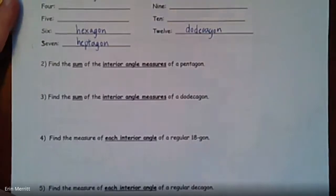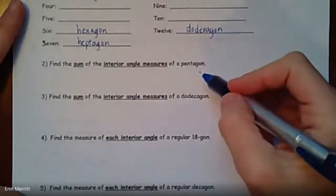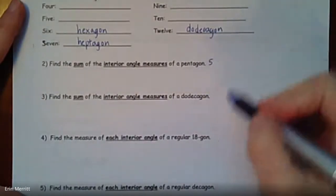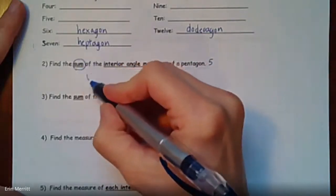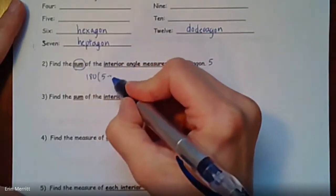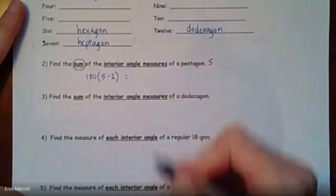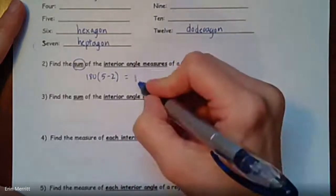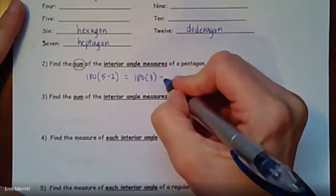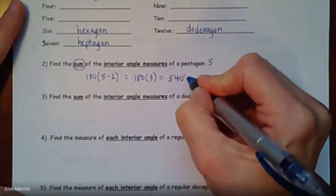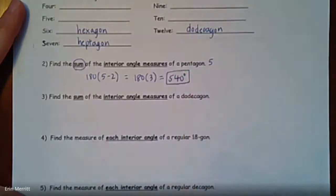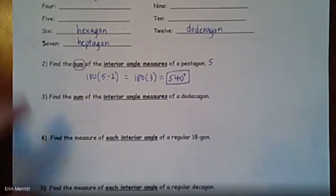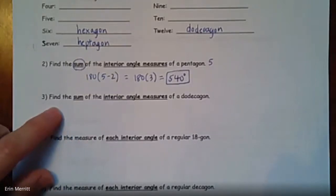When it says find the sum of the interior angles of a pentagon, I'm expecting you to know that's five sides. So if I want the sum, it's 180 times (5 minus 2), which is 180 times 3, giving you 540 degrees. If you add up all five angles, that's what you should have. For the sum of a dodecagon, just make sure you know what value to plug in for n.